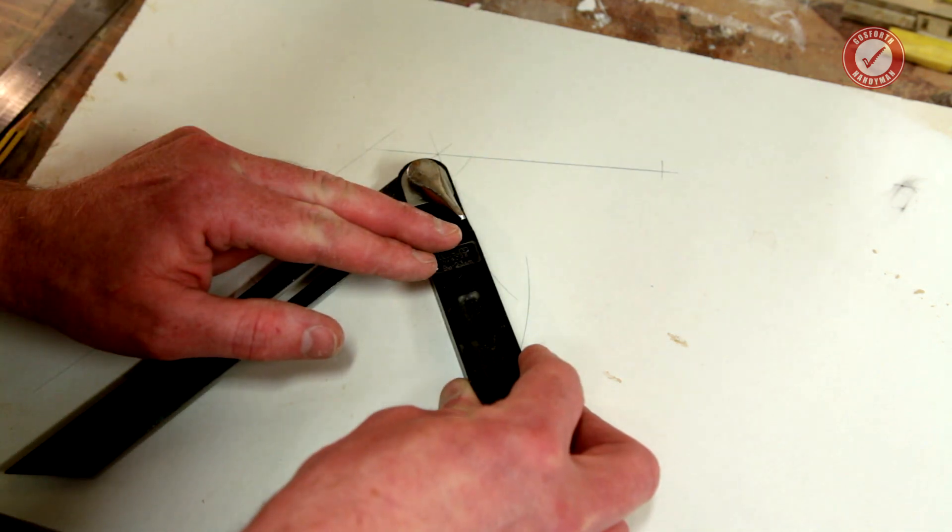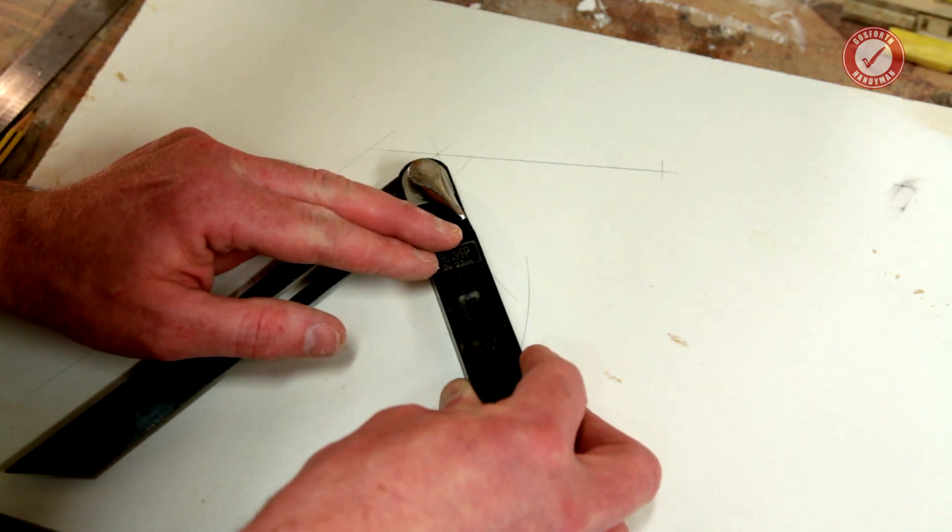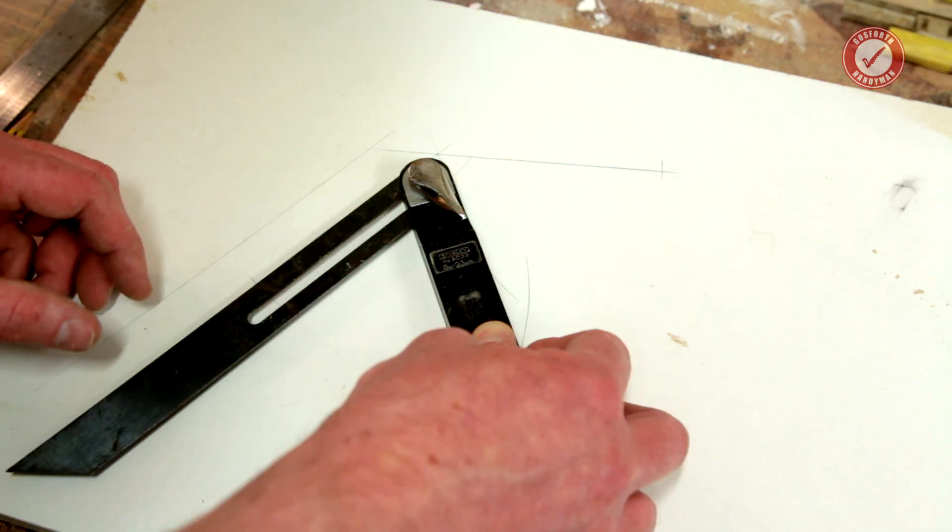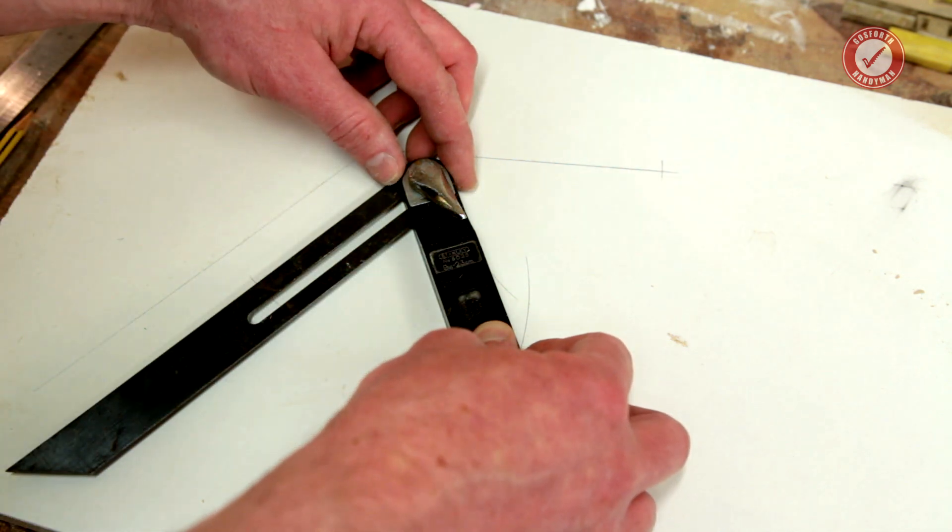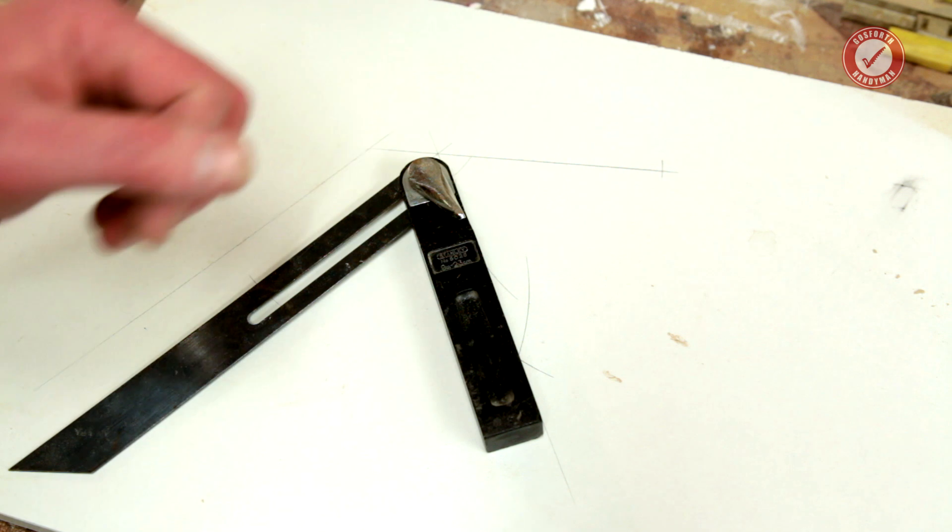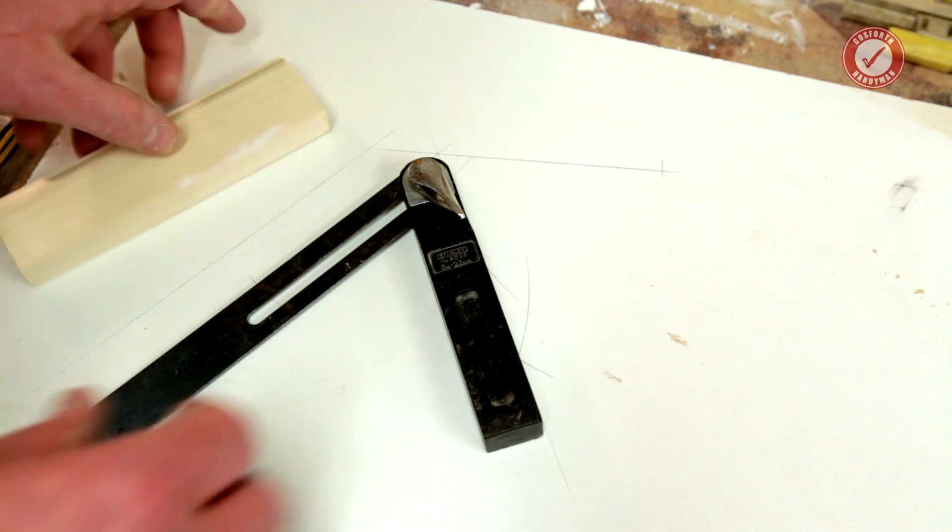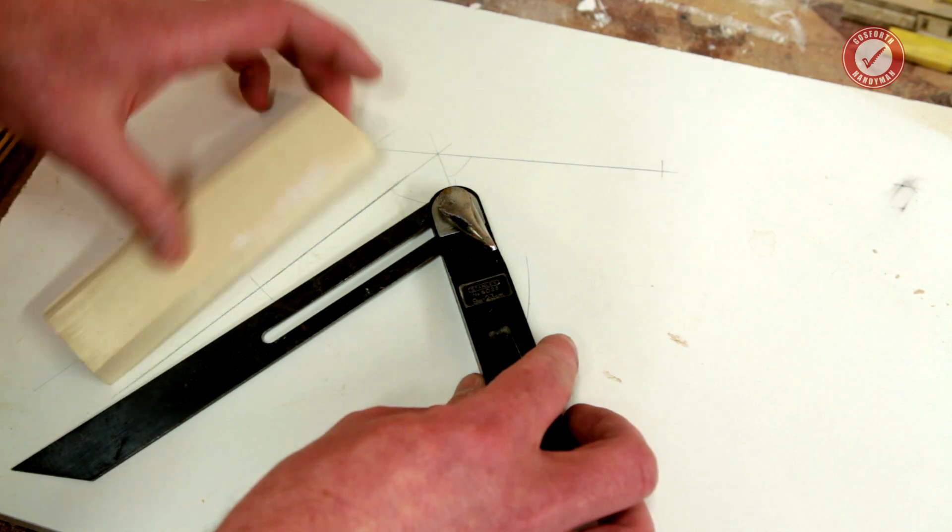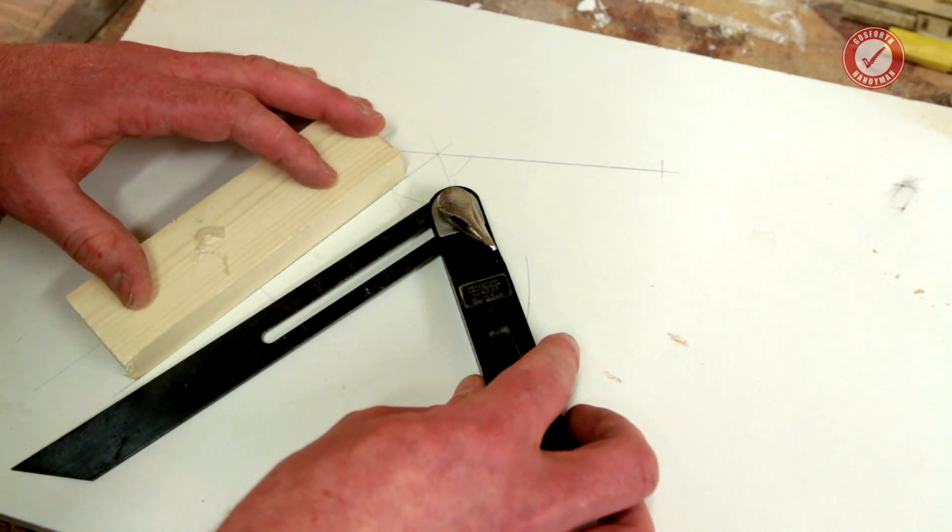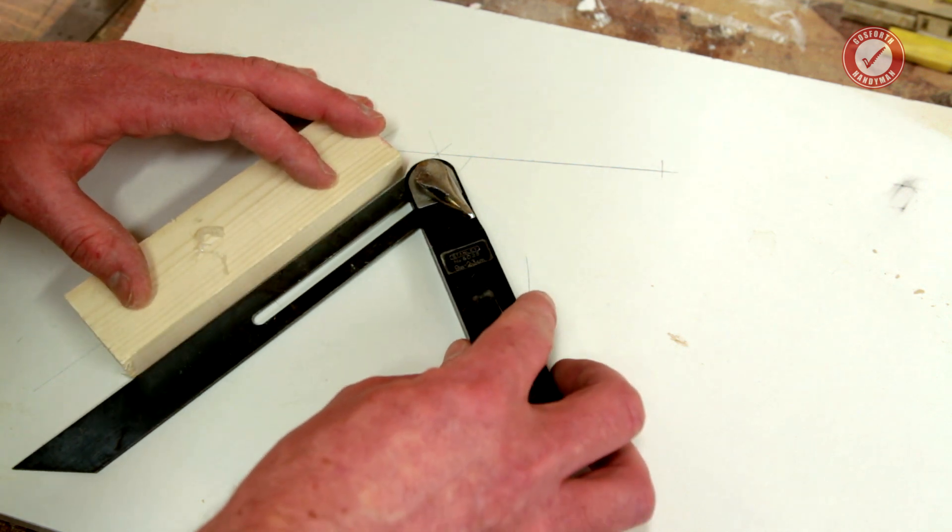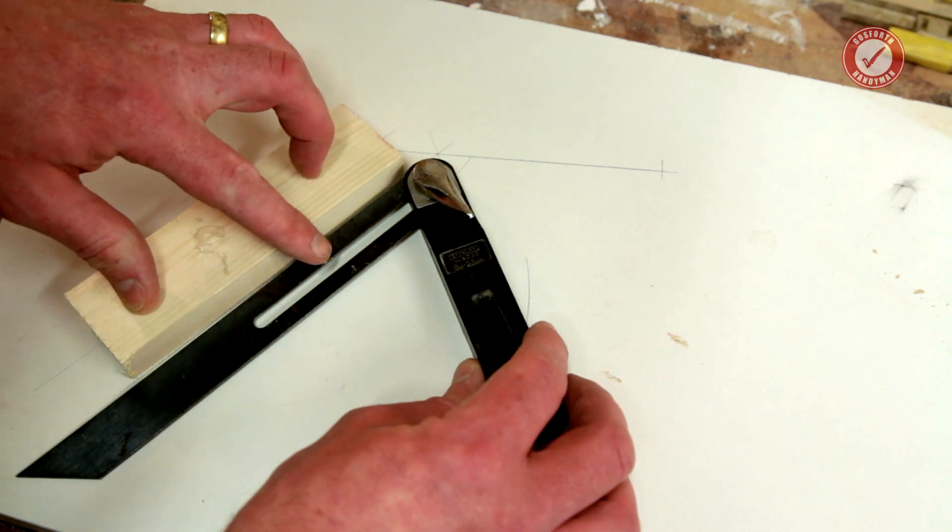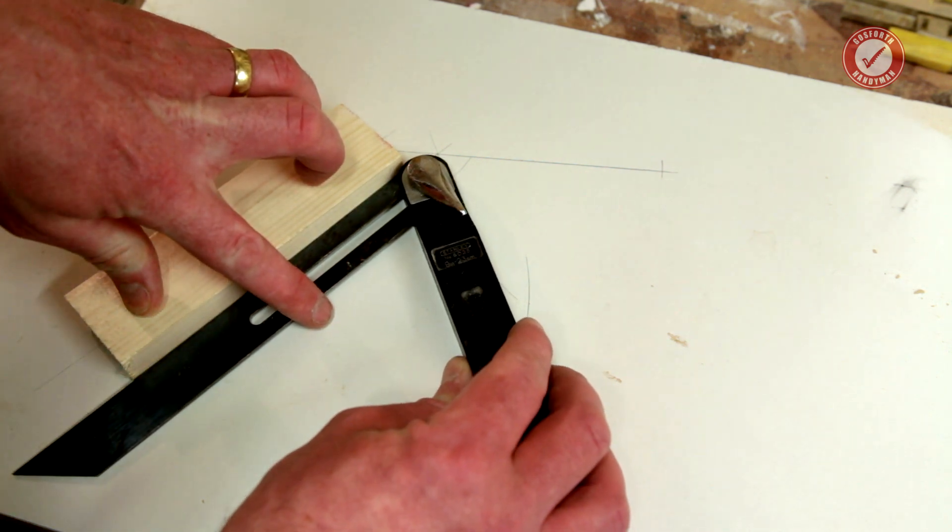You want to get this pretty exact, so I'm lining up with that dead on. What you can do to make life a bit easier is if you've got a scrap of wood or something that you can put on that angle, preferably something that doesn't have goop on it, then you can just put it up against it like that, lock it in.